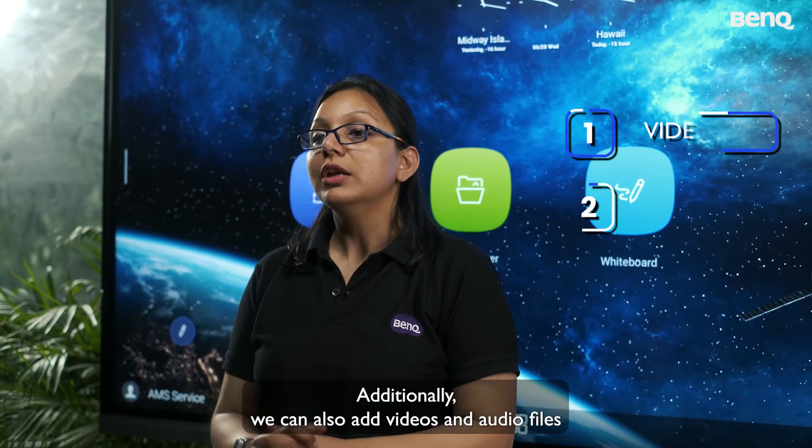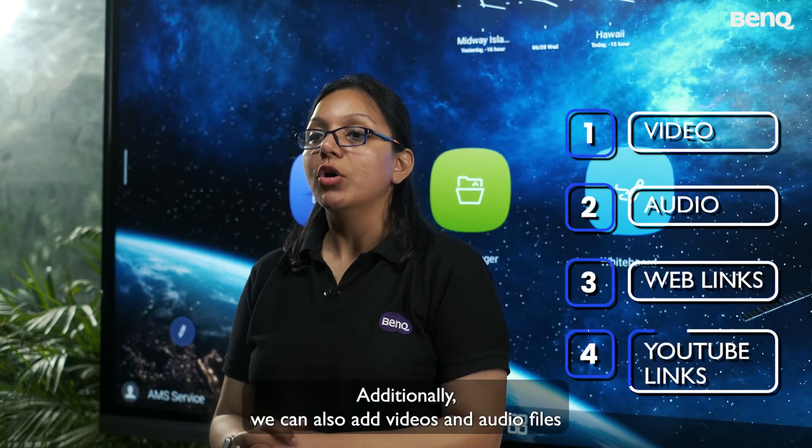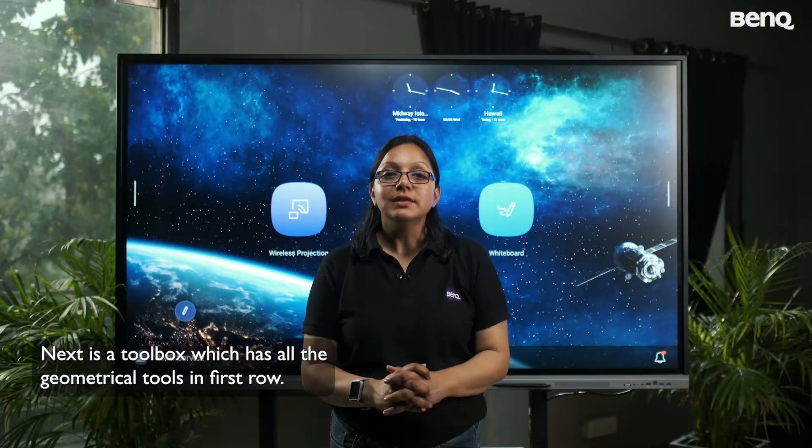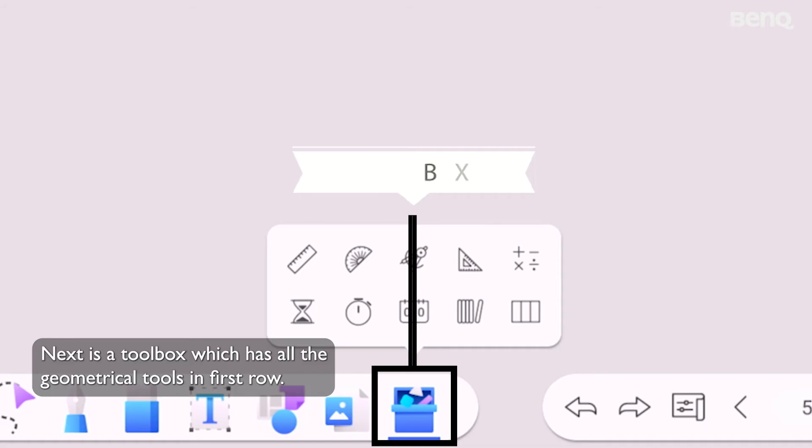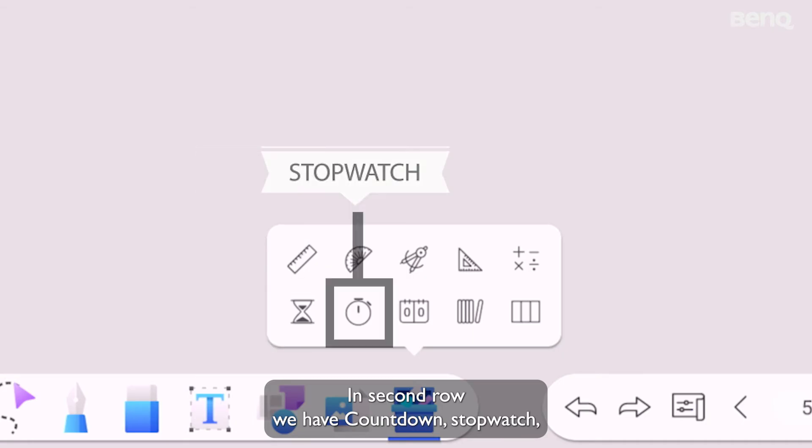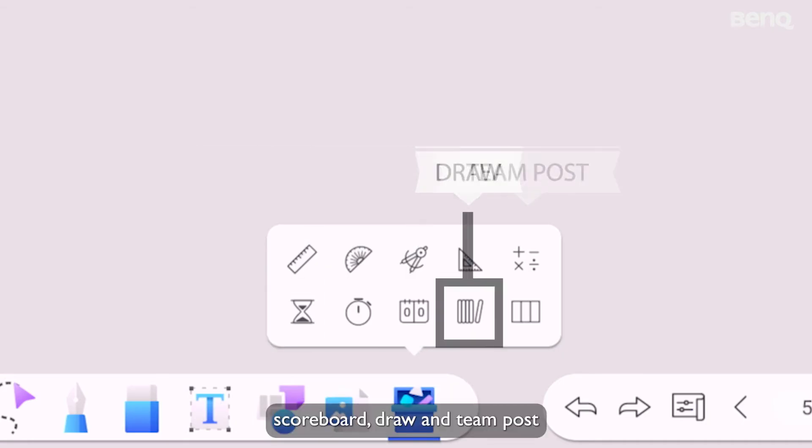Additionally, we can also add videos and audio files, as well as any web link or YouTube links. Next is a toolbox, which has all the geometrical tools. In first row, we have ruler, protector, compass, set square, and calculator. In second row, we have countdown, stopwatch, scoreboard, draw, and team post.